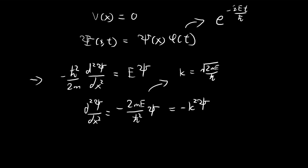By putting E inside the square root here, I'm implicitly assuming that E is greater than zero. This is indeed valid because if E were less than zero, you would solve the differential equation and find that ξ(x) is equal to an exponential function that is not normalizable. So that's why we are safe to assume that E is always greater than zero.